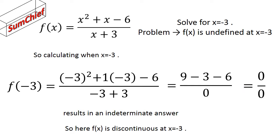Now this gives us a little bit of a problem, because this results in an indeterminate answer. Zero in the numerator, not a problem. Zero in the denominator, this is a problem. So we've shown that f of x is discontinuous at x equals minus 3.